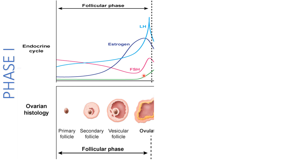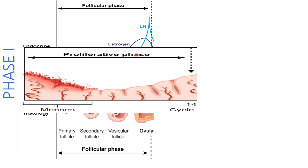During the follicular phase we are building a follicle. FSH secreted from the pituitary has two functions: first, it builds a good enough follicle — that's why it's called follicle-stimulating hormone. Second, both FSH and LH together stimulate the follicle to produce estrogen, whose purpose is to fix the damage menses have done. Menses shed the entire uterine wall, so we need enough estrogen to rebuild it during the proliferative phase of the uterine cycle.